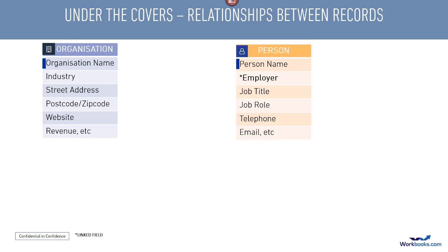If you work in a B2C industry, you don't really care who your customer works for, but in the B2B industry it will be important. The employer field is what we call a linked field — you can see it's got a little asterisk next to it — and what this means is that if you do populate the field, it can only be populated with the name of an organisation on your database. So it can be blank, but if it is populated it has to be with the name of a record that already exists on your system.